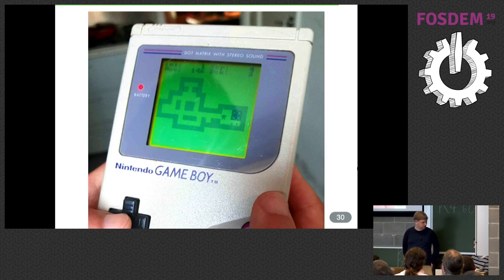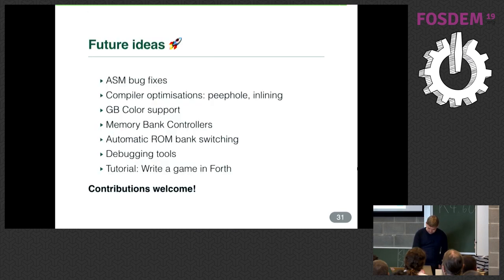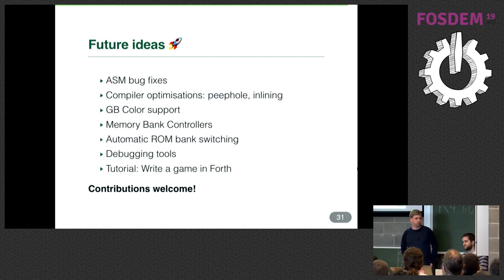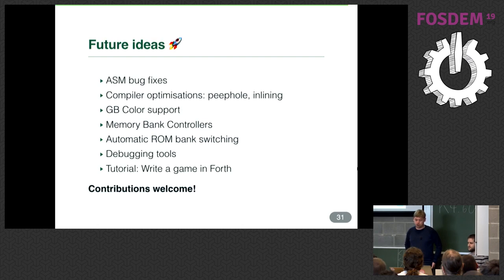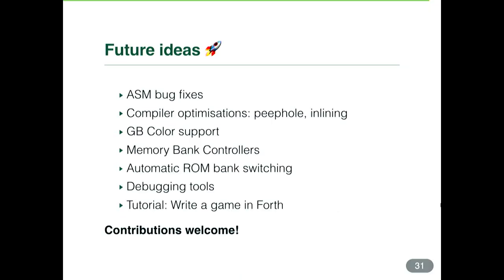We did have to scrap about half the levels because they didn't fit on the cartridge. In the end we have a pretty complete Forth implementation — there are still some tickets open to make it fully ANS-standards compliant. There are also known bugs in the original Game Boy assembler, such as the increment-by-sprite bug, where incrementing a register in a certain range completely messes up sprites in a way that's not easily restorable.